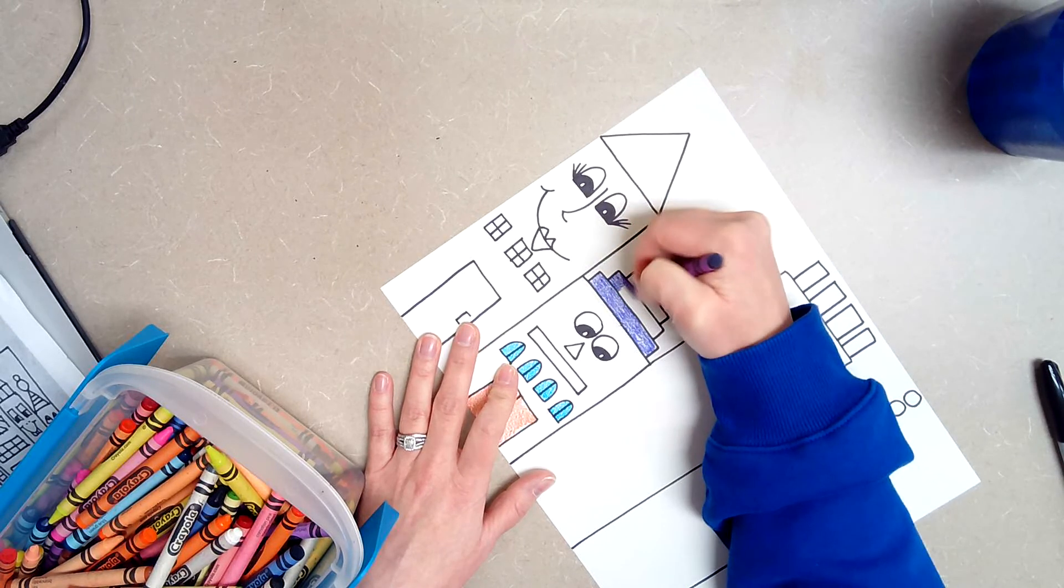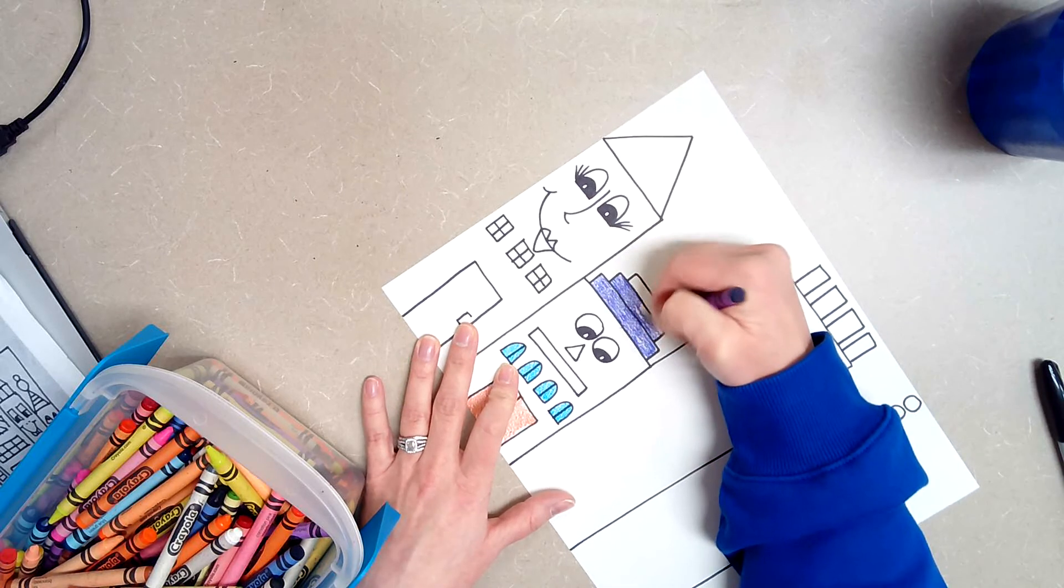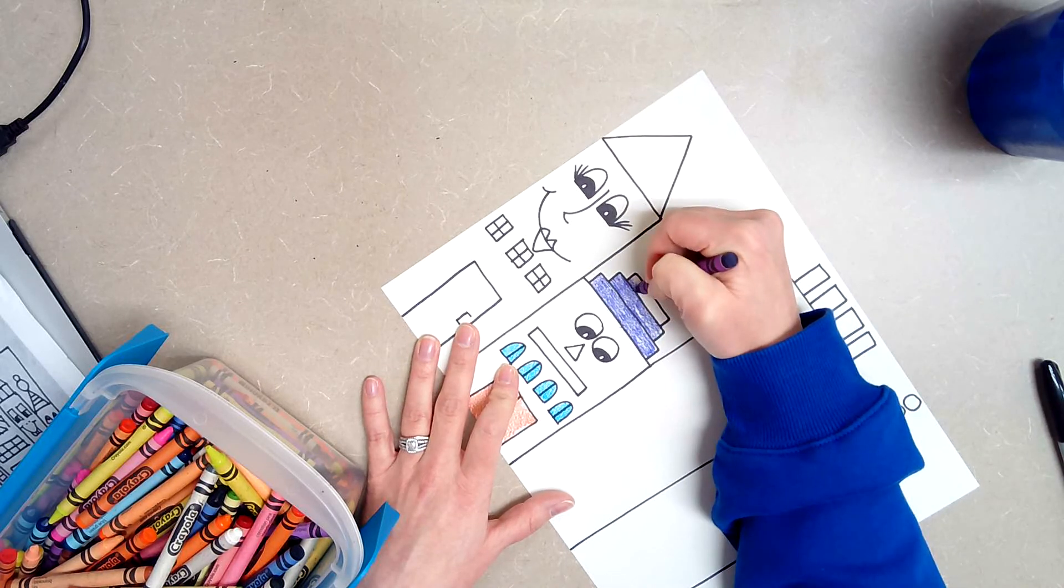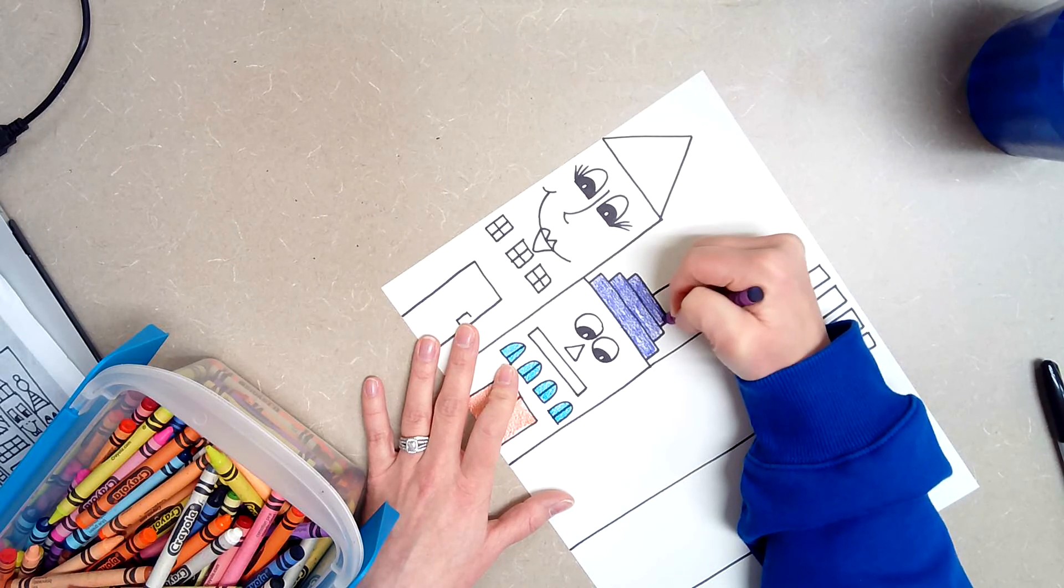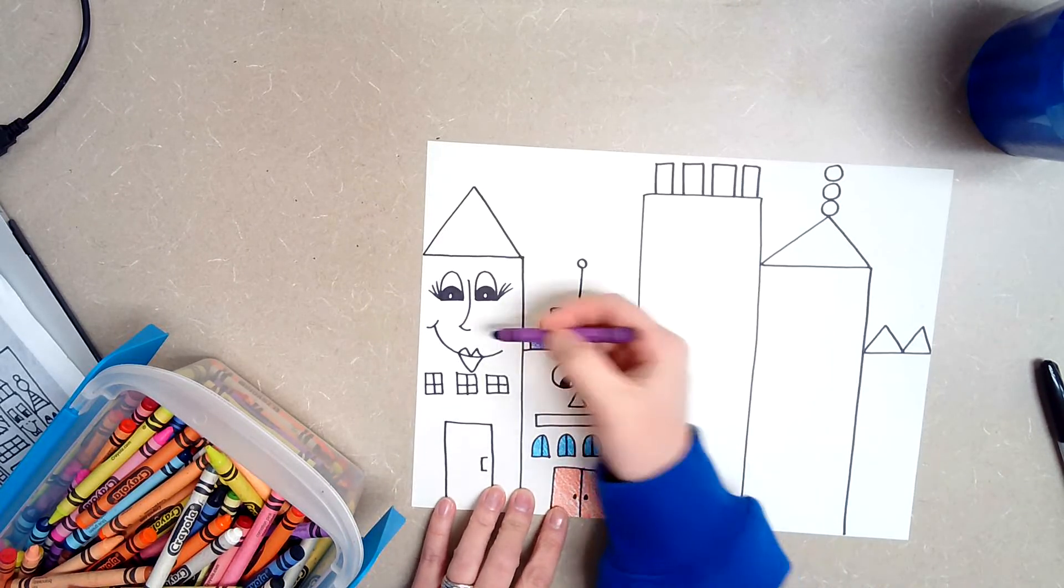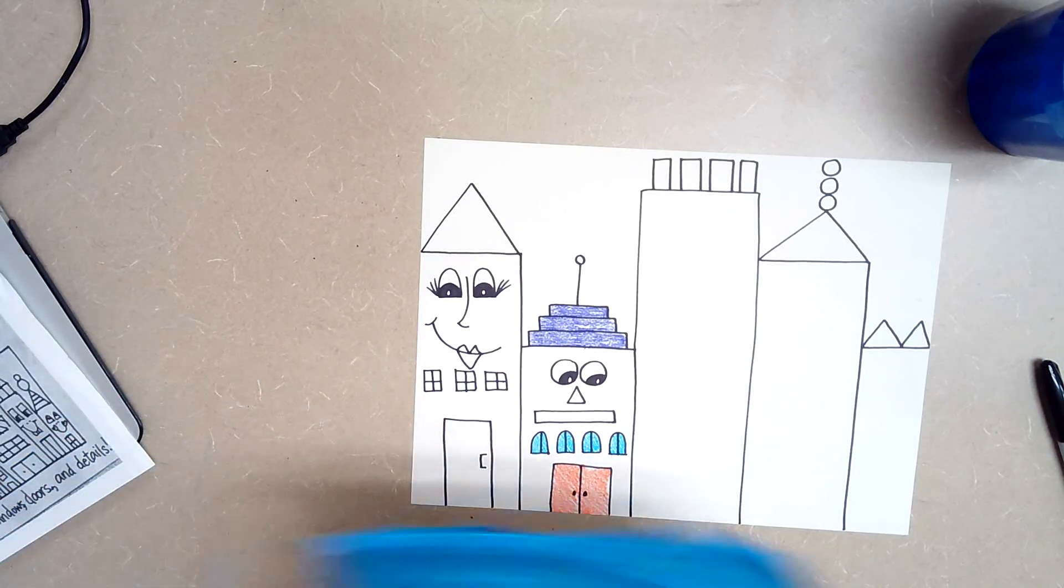Okay, now if you have markers you can go ahead and follow along with the next step that I'm going to show you. If you do not have any markers then you can just go ahead and color in your buildings using crayons.